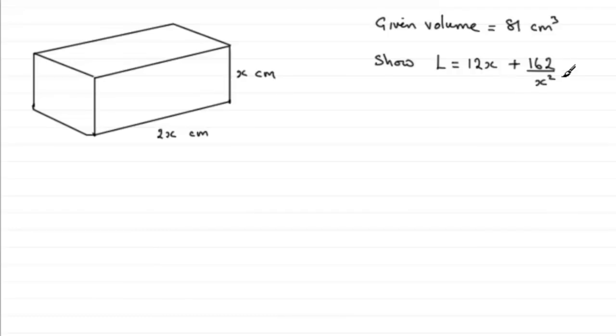So how are we going to do this? Well, the first thing I notice is that if we're to add up all the lengths of the edges, we don't seem to know this length here. So to get that, what we've got to do is think about using the volume fact given here that the volume is 81 centimeter cubes.